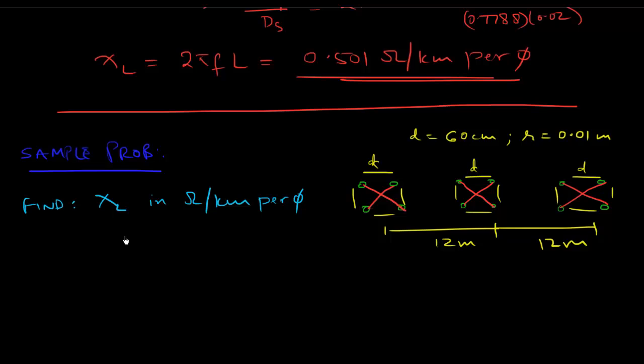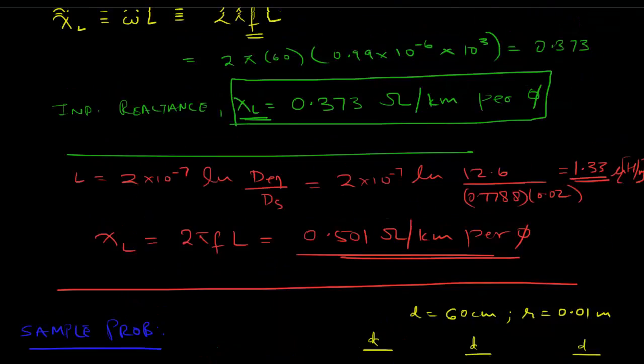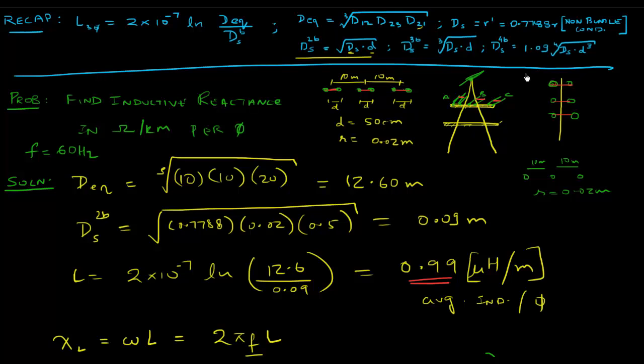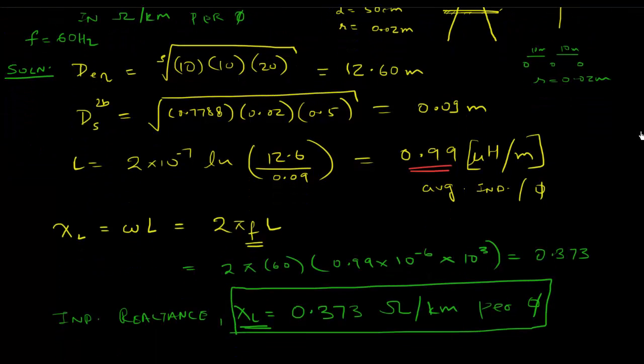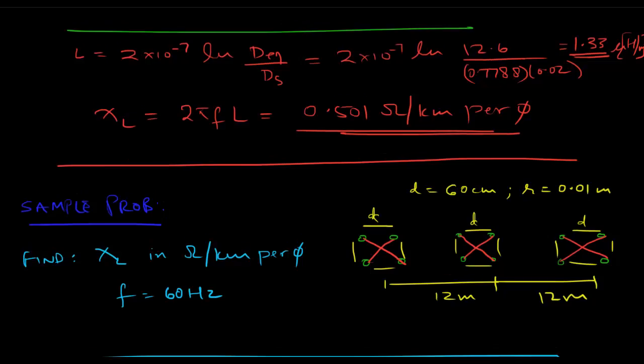I'm going to give you the value of d as being equal to, let's say, 60 centimeters, and your r is 0.01 meters. Once again, you have to find out the XL value in ohms per kilometer per phase, and f is given as 60 hertz. It should be relatively straightforward. The only thing you have to do is give you a single conductor to a four bundle conductor, so you'll use this formula right here.